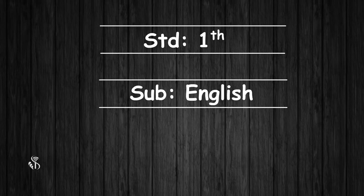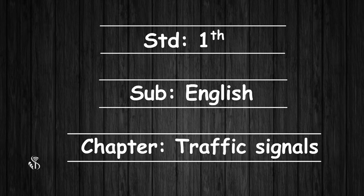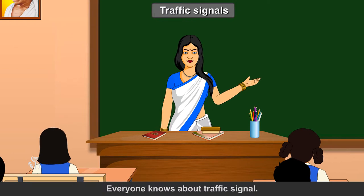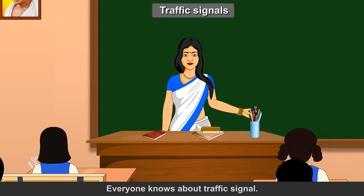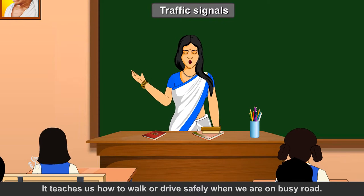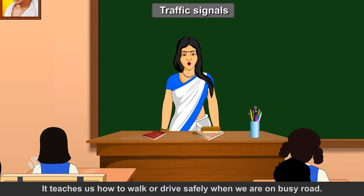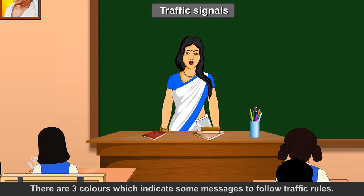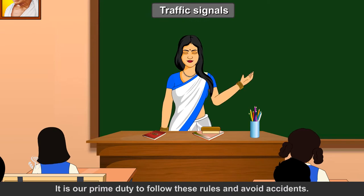Standard First Subject English, Chapter: Traffic Signals. Hi children, today we will learn about traffic signals. Everyone knows about traffic signals, isn't it? It teaches us how to walk or drive safely when we are on a busy road. There are three colors which indicate some messages to follow traffic rules.